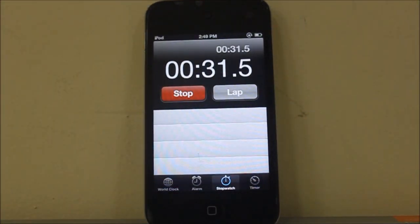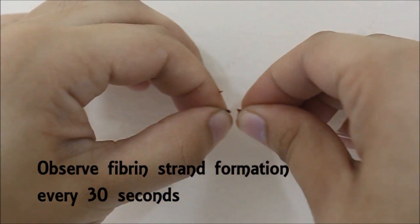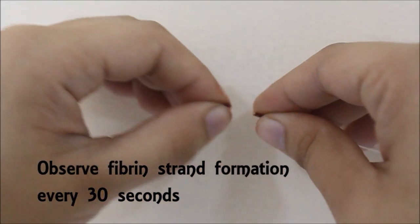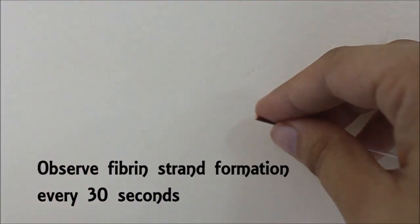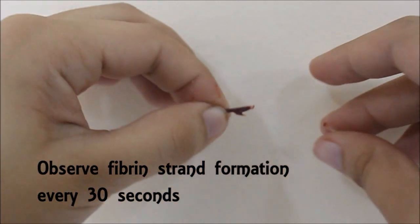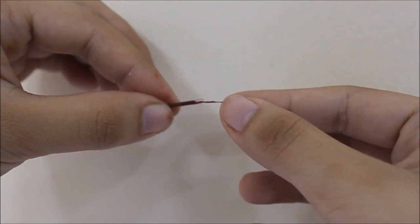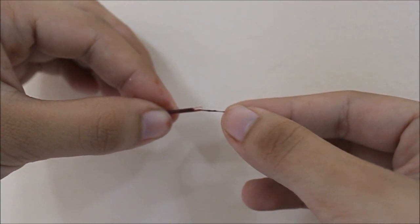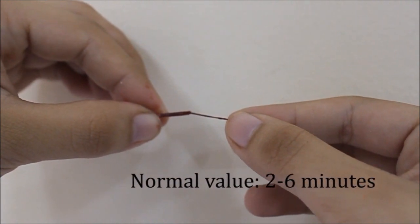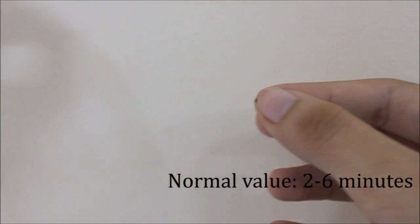At 30-second intervals, break off a piece of the capillary tube gently. Take note of the formation of a fibrin strand that fills in the gap between the capillary tube and the broken piece. The time that elapses is taken as the clotting time. The normal value for the capillary method is 2 to 6 minutes.